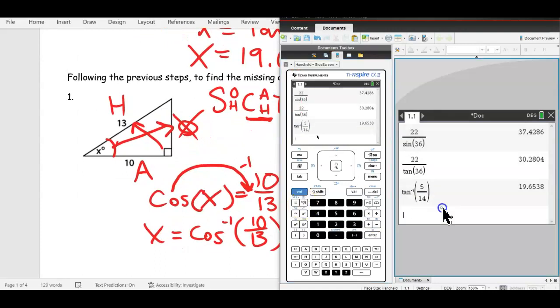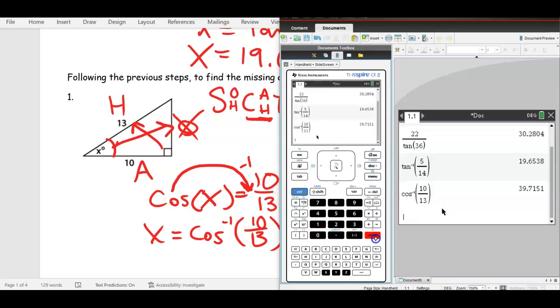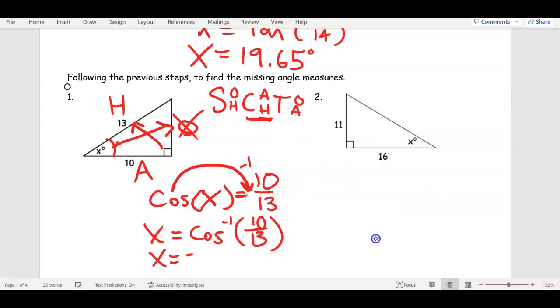Could you type that in the calculator and get your answer? Trig. Cosine inverse, 10 divided by 13. 39.715 makes the 1 go up. 39.72. Degrees. So far, so good.